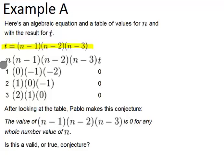And what we have here is really just a table that's divided up into three parts. We have our values for n, then our calculations in the middle, and then our answer for t.